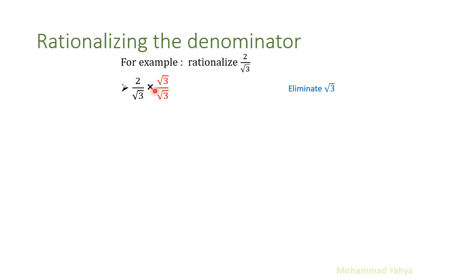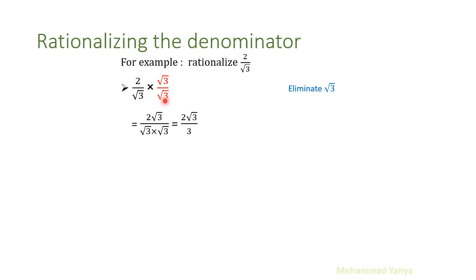We multiply by radical 3 above and below — basically the conjugate of radical 3 is radical 3. It is very important to multiply in both numerator and denominator. So 2 times radical 3 is 2 radical 3, and radical 3 times radical 3 is radical 3 squared, so the radical is eliminated.